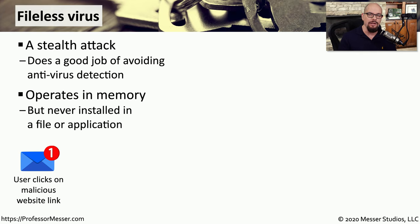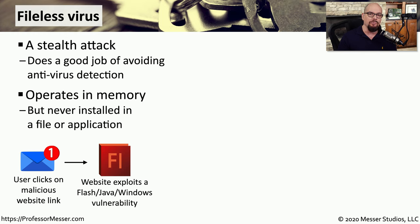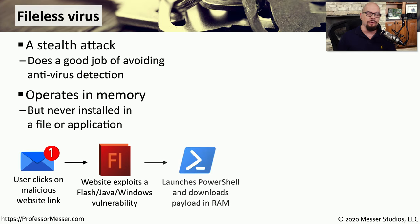A common way to execute a file-less virus is to click a link on a website or inside of an email. This will then download software that will run as a Flash file, a Java file, or perhaps it takes advantage of a Windows vulnerability to begin executing. These vulnerabilities in Flash, Java, or Windows might allow a script to be run in PowerShell, for example. PowerShell would then download the virus from a third-party website and execute that virus in the memory of your local computer.